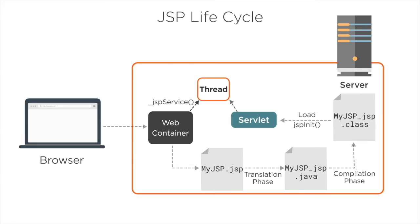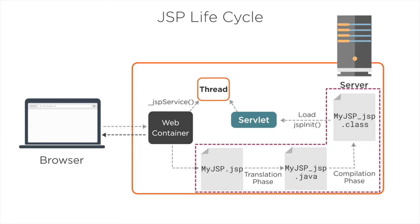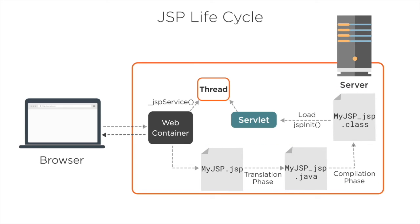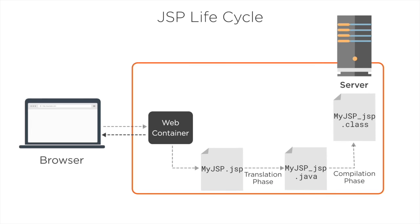The servlet sends a response back to the client or forwards the request to another web app component. When we deploy a web app with a JSP, the translation and compilation phase happens only when the JSP page is requested for the first time or the JSP page has been modified. Once translated and compiled, it is just like any other servlet. Once the servlet has been loaded and initialized, the only thing that happens at request time is creation or allocation of a thread for the service method. Finally, whenever the container removes the servlet instance from service, it calls the JSP destroy method to perform any required cleanup.